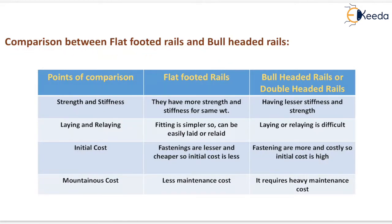Comparison between flat footed rails and bull headed rails — for strength and stiffness: flat footed rails have more strength and stiffness for the same weight, whereas bull headed or double headed rails have lesser stiffness and strength.